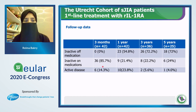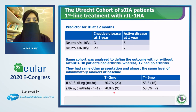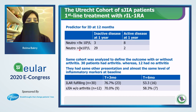Follow-up data showed that at one year, almost 54% had inactive disease and were off medication, and more than 72% had inactive disease at three and five years. About 85% had inactive disease and were on medication as early as three months.